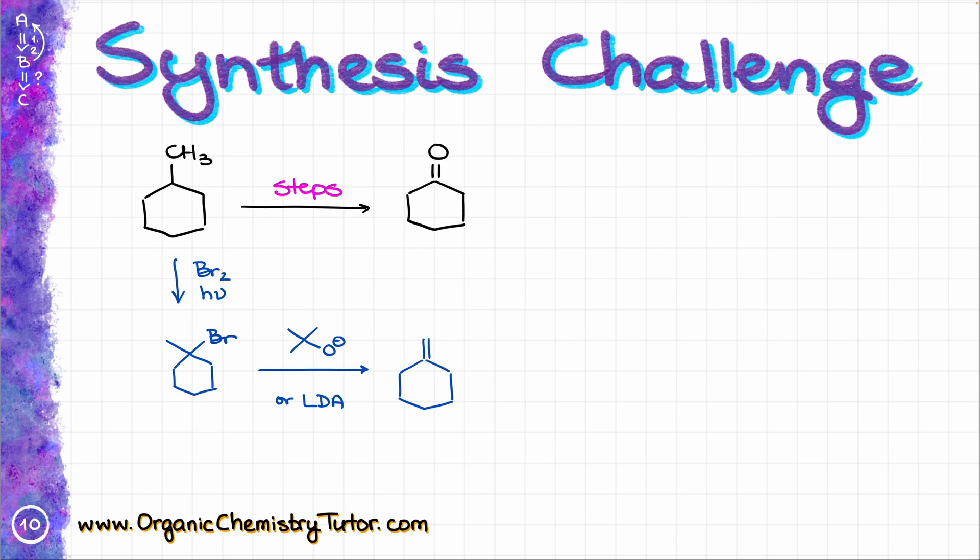And then from this point, we are going to do the ozonolysis. So for the ozonolysis, step number one is going to be O3, and step number two is going to be DMS or any other workup that you like, because in this particular case, the workup step doesn't matter. We are going to form a ketone. Workup only matters when you have an aldehyde versus carboxylic acid. If you want an aldehyde, you would do the reductive workup like DMS. If you wanted a carboxylic acid, you would do the oxidative workup with hydrogen peroxide. But in this case, since we are forming a ketone, that doesn't really matter at all. And that's how we are going to accomplish this synthesis.